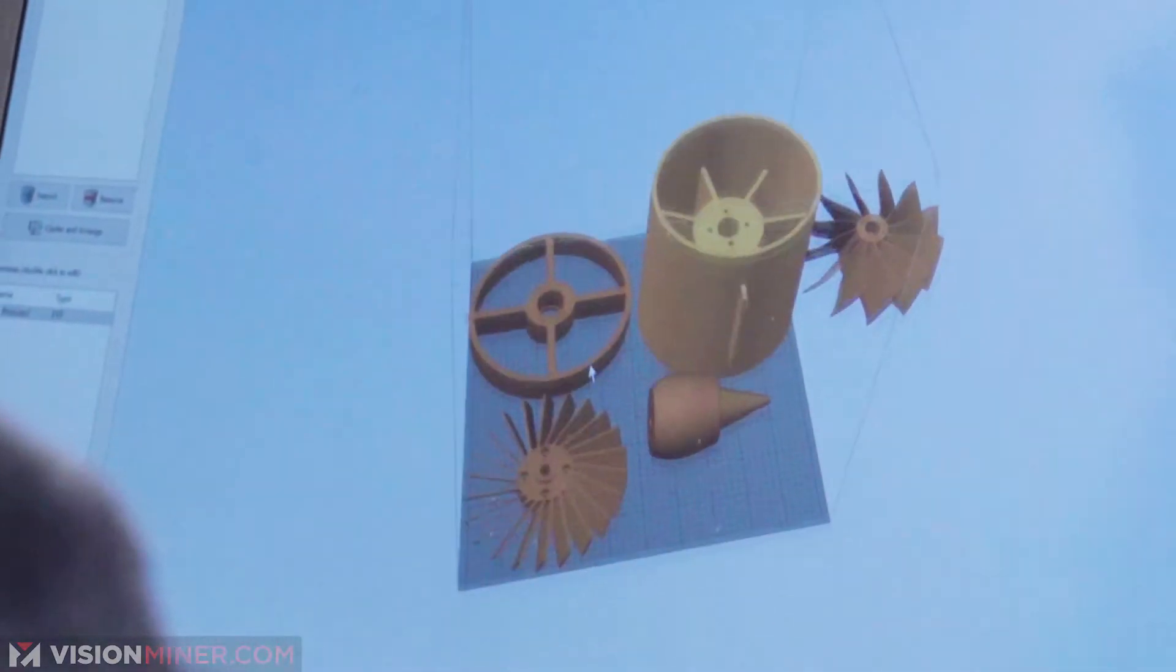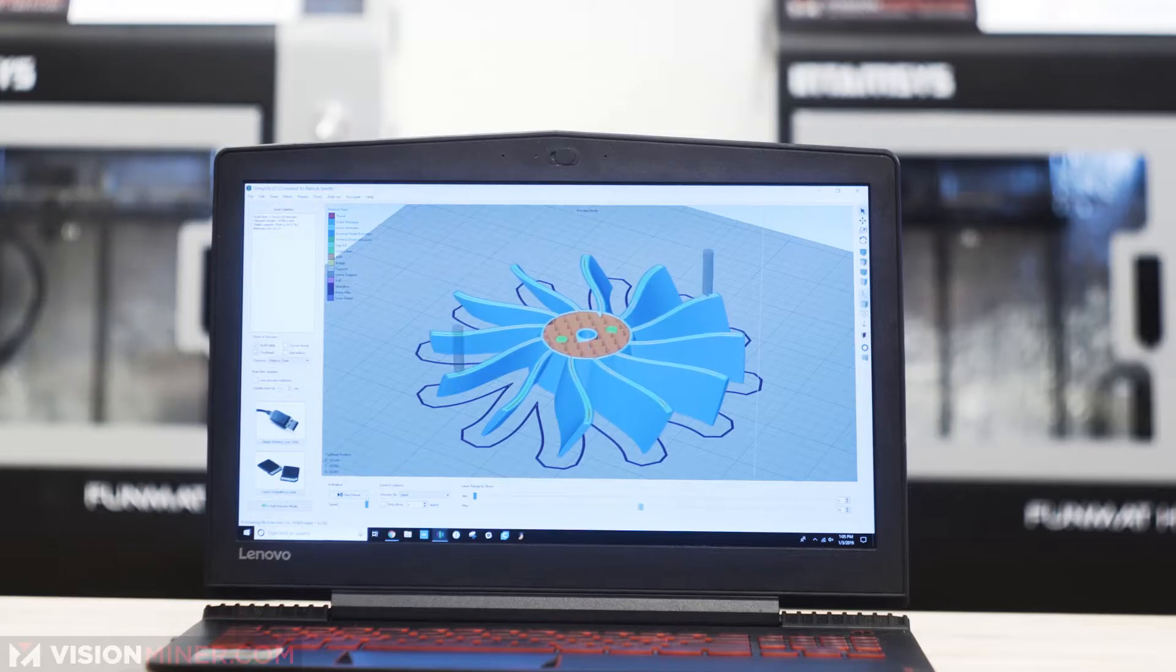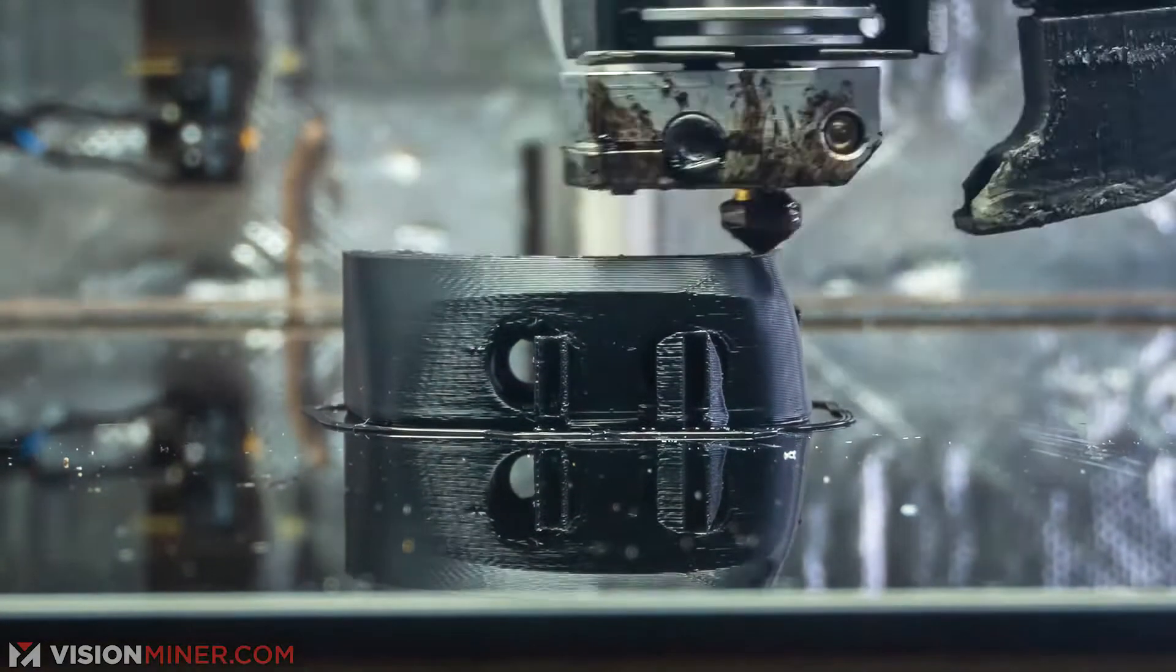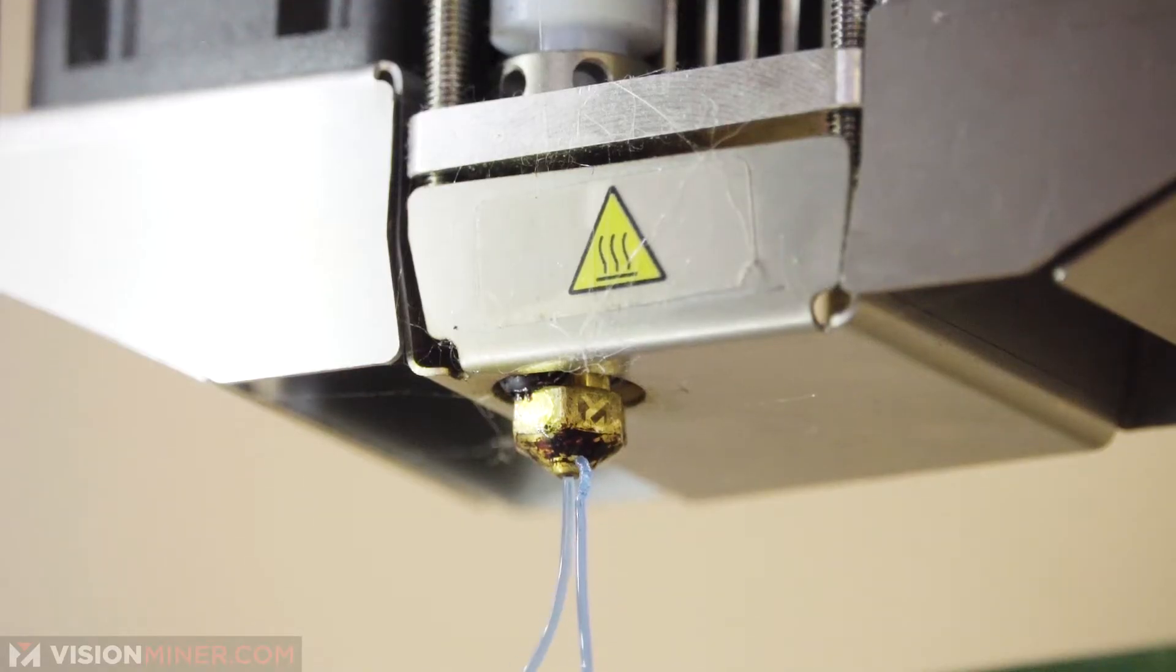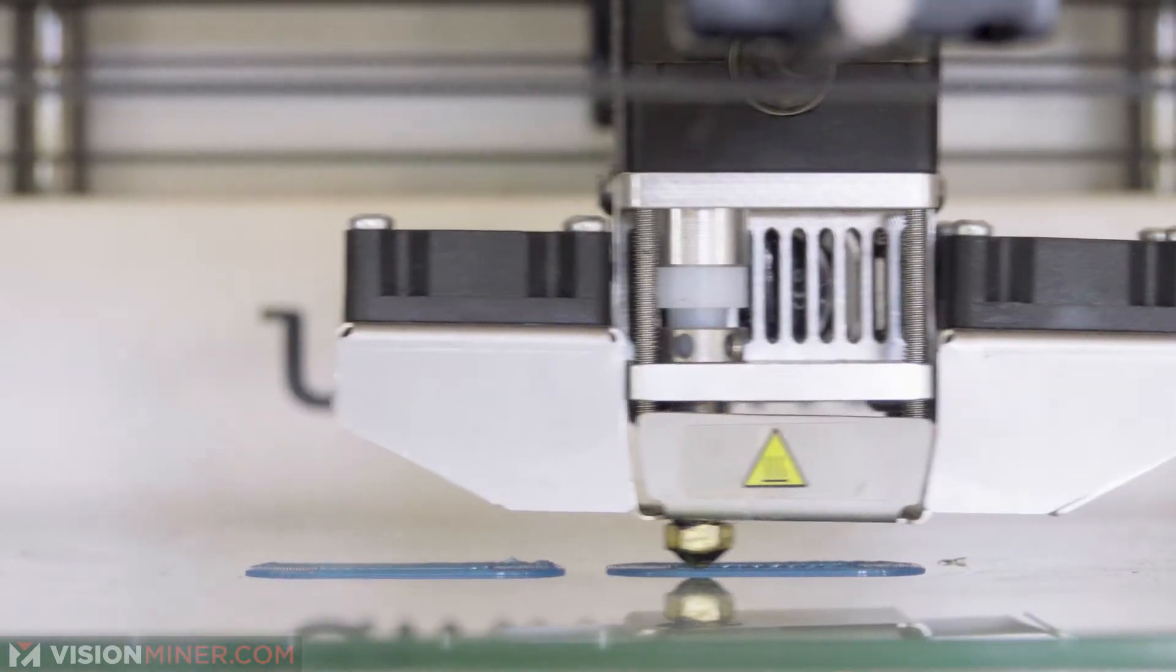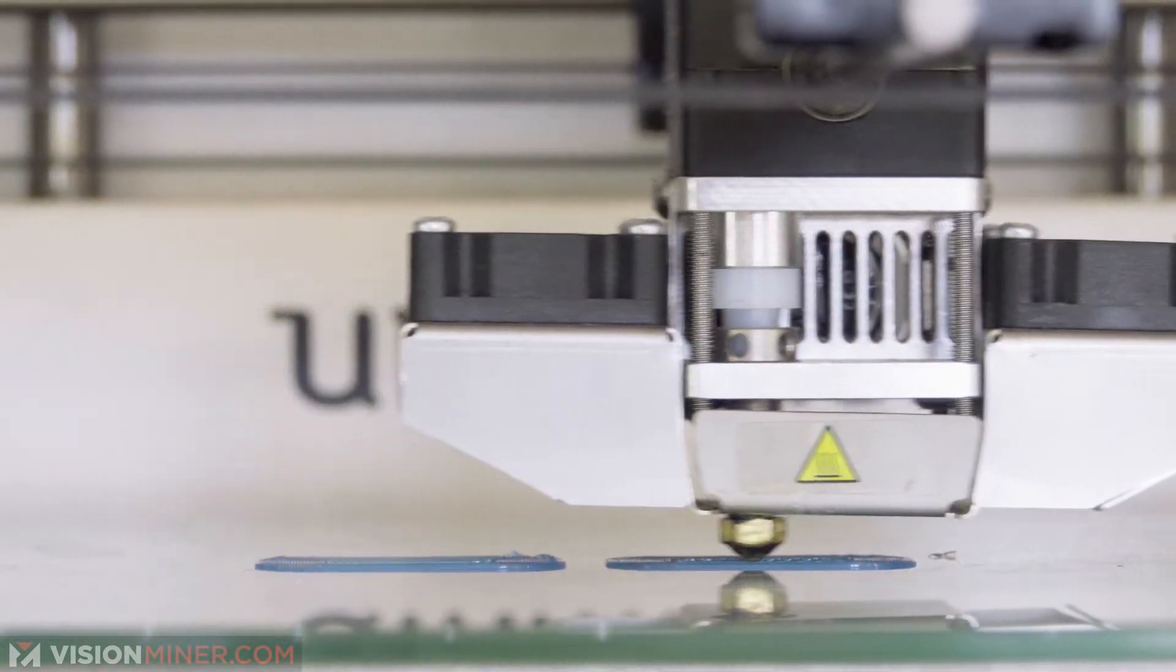A slicer application like Cura or Simplify3D then turns the 3D model into a tool path which is readable by the 3D printer. The printer takes the material and squeezes it through a hot nozzle in a very specific pattern, melting small lines of plastic into a larger complete object.